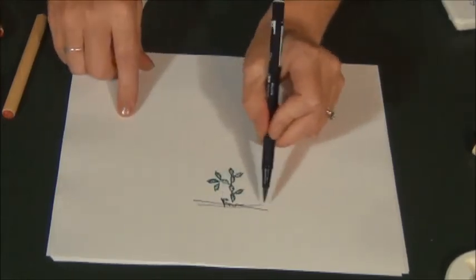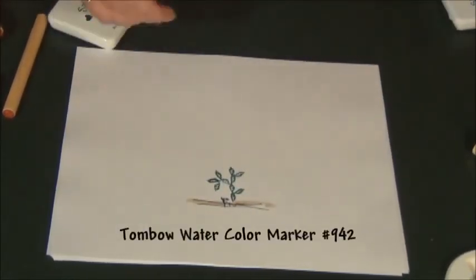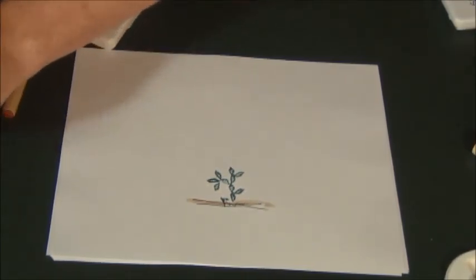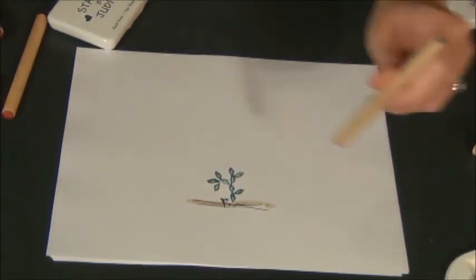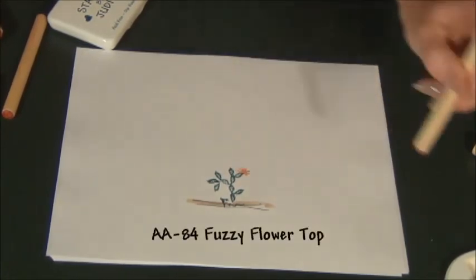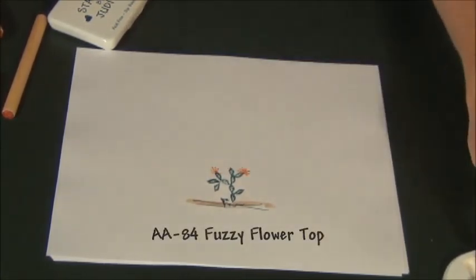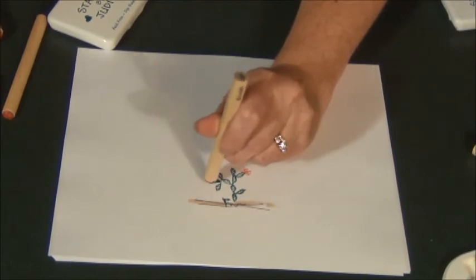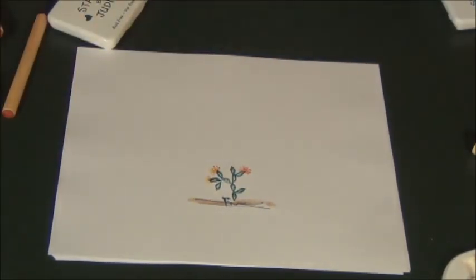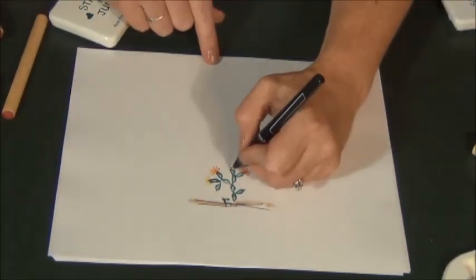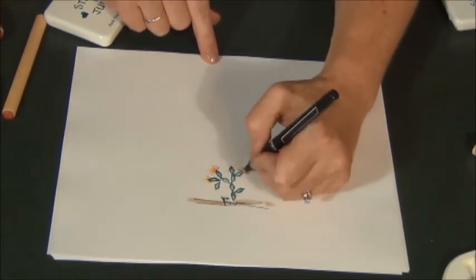Take a brown pen so this isn't floating. Take some sort of little stamp. This is the fuzzy flower top. And your fine line pen. And again, you have a different kind of cactus.